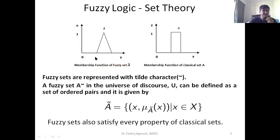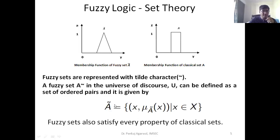In between, a fuzzy set can achieve any real value representing a degree of membership. These sets are often represented by a tilted sign above it, like an integral sign, to differentiate them from classical sets. We can represent a fuzzy set in a simple mathematical manner — the fuzzy set A equals a value of x with the degree of membership in the fuzzy set.